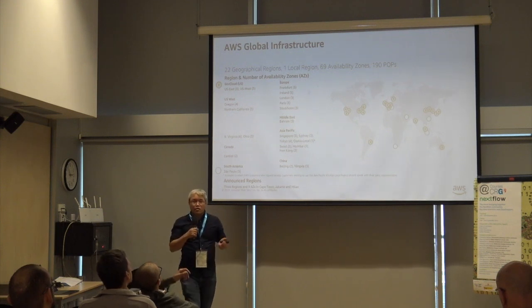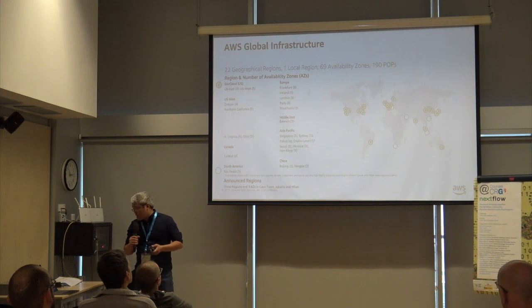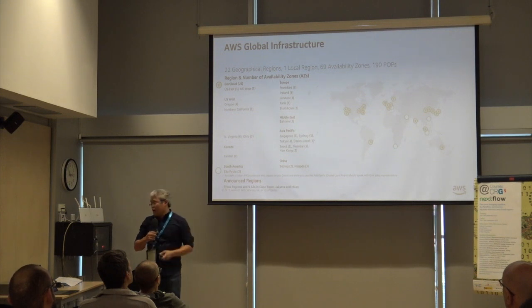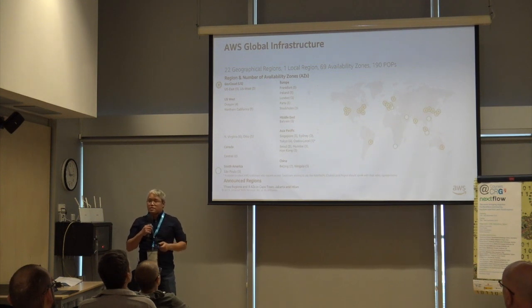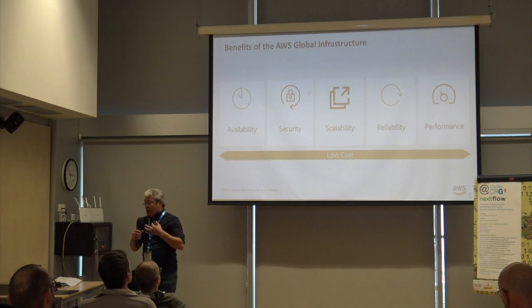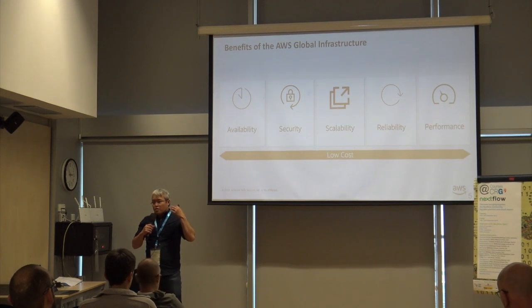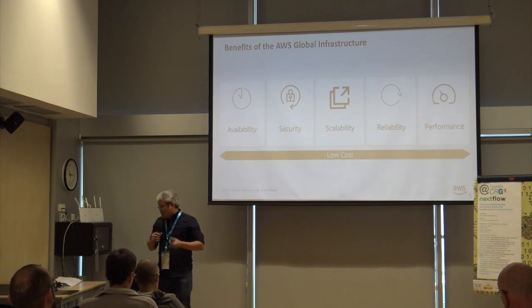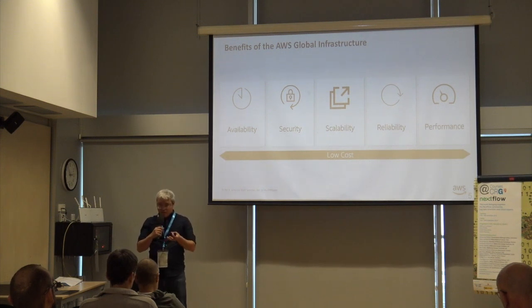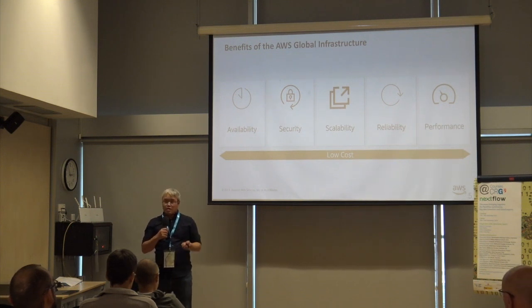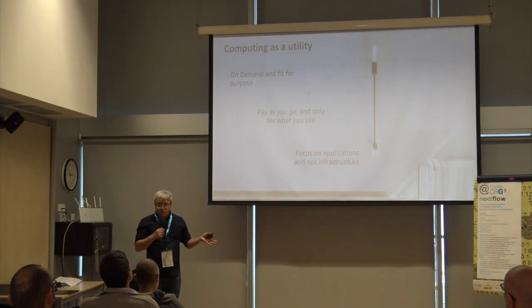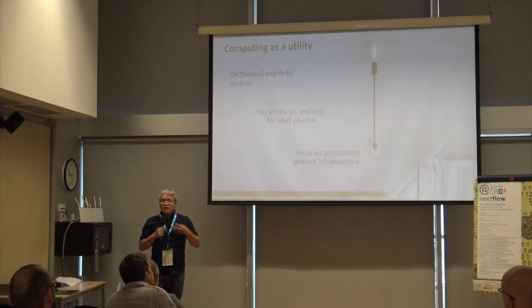We have a very large global footprint — currently 22 global regions with 69 availability zones, so we're all the way around the world. If you want to deploy an application, you can do so in minutes. Applications you develop on AWS get availability, scalability, security, reliability, and performance across the board. And because of our economies of scale, we provide low costs to our customers.